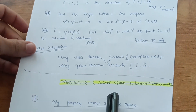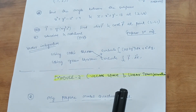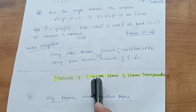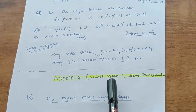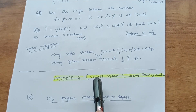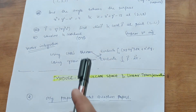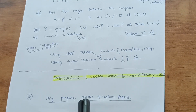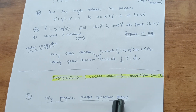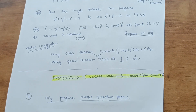The final module is Vector Space and Linear Transformation — a new chapter inserted by VTU especially for EEE students, not previously present in the 18, 17, or 15 schemes. I cannot predict the most important questions as I am not fully familiar with this module. Focus on the two available model question papers and prepare three to six problems from them to secure at least 10 marks. Thanks for watching.